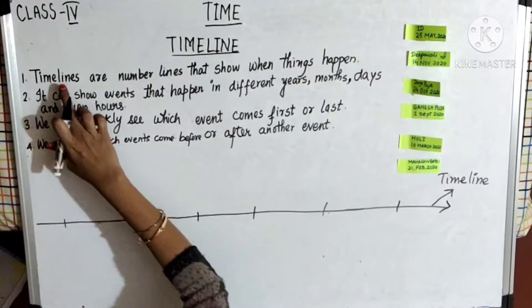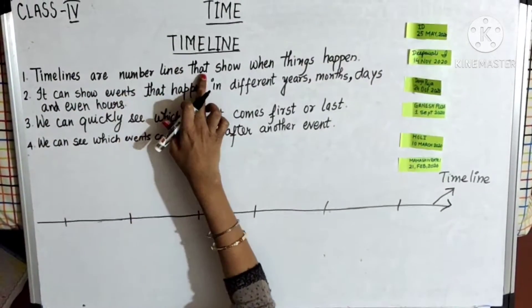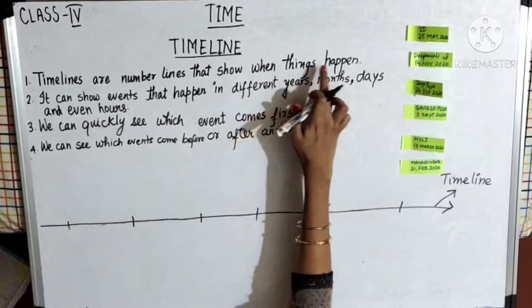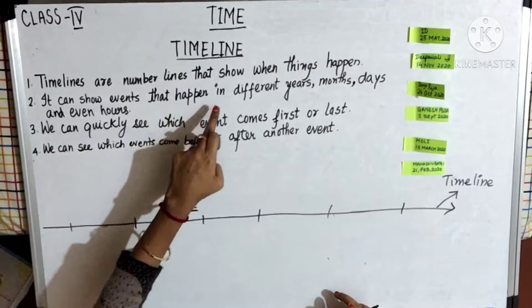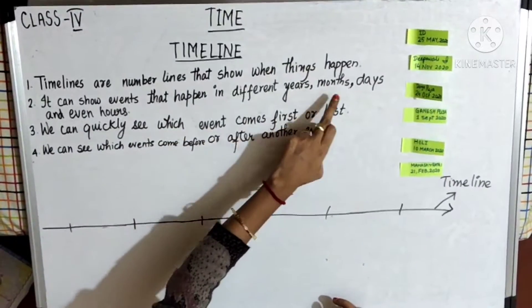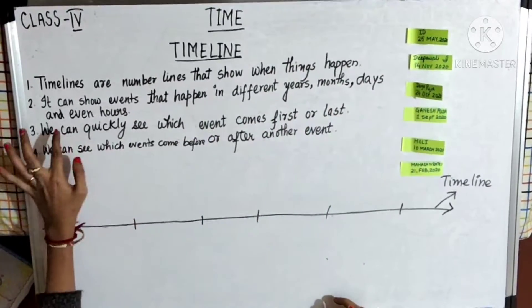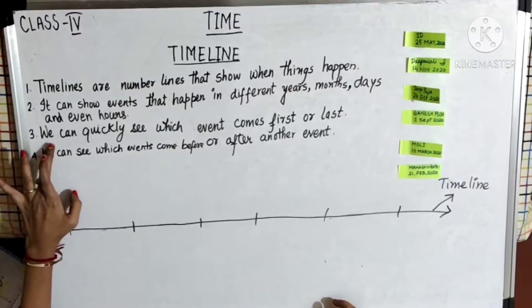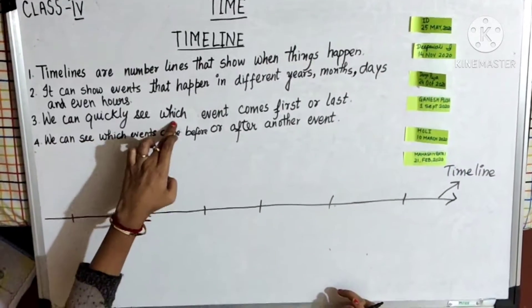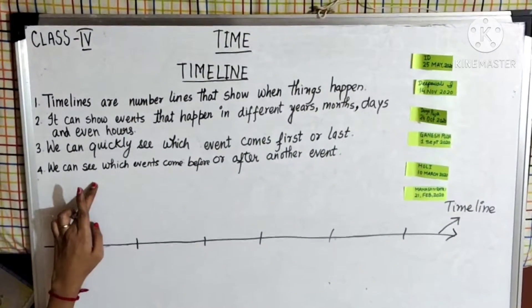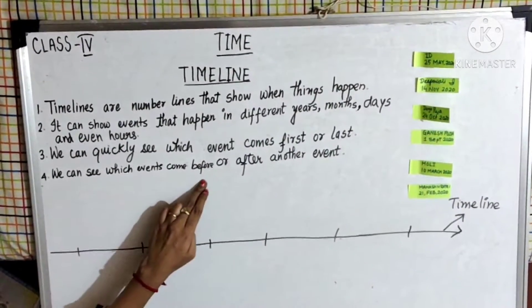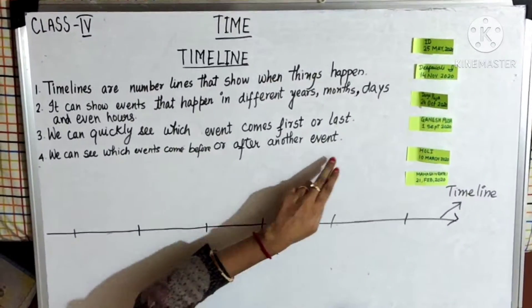Timeline. Timelines are number lines that show when things happen. They can show events that happen in different years, months, days, and even hours. We can quickly see which event comes first or last with the help of a timeline. We can see which event comes before or after another event.